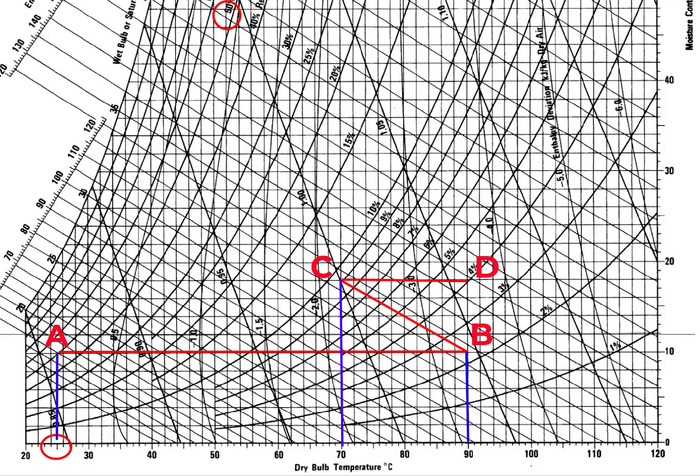The adiabatic saturation process is represented by a constant wet bulb line originating from point D going all the way to saturation. The saturation curve is the 100% relative humidity curve on the psychrometric chart, and that helps us identify point E. So the entire process is: A to B in the heater, B to C in the first dryer, C to D in the second heater, and D to E in the second dryer.